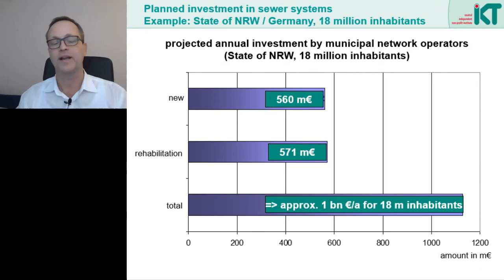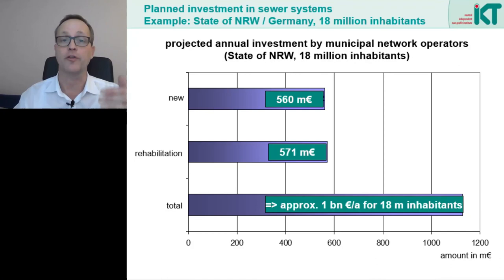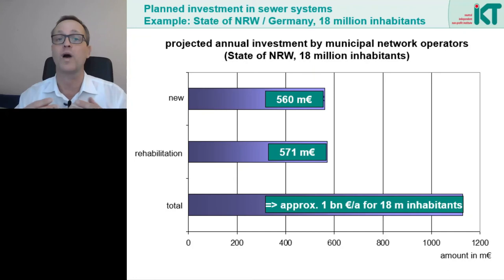Finally, what will the rehabilitation of sewers cost? Here we see the results of a survey of investment plans of network operators in the state of North Rhine-Westphalia in Germany, for an area with 18 million inhabitants. A total annual volume for investments in the sewer system of about 1 billion euros is expected, divided equally between new construction and rehabilitation.